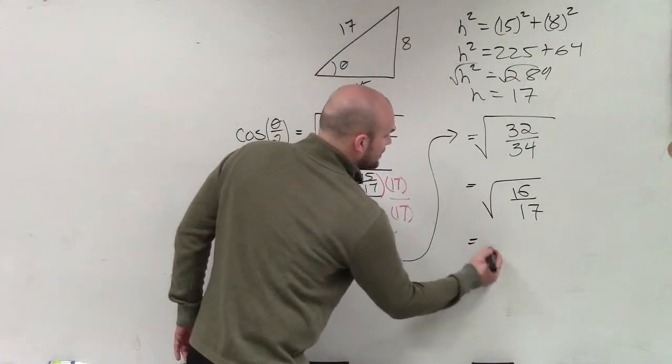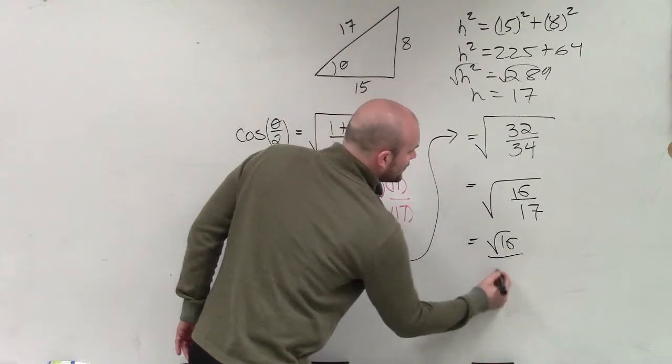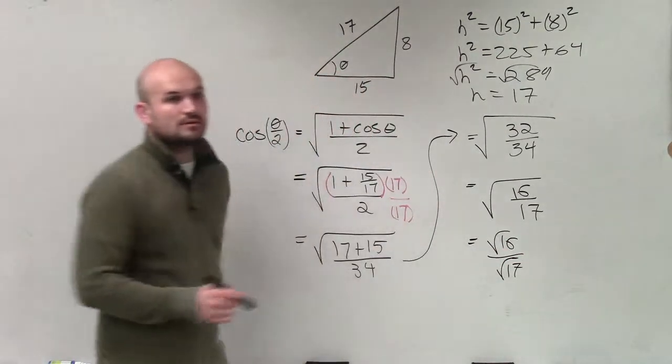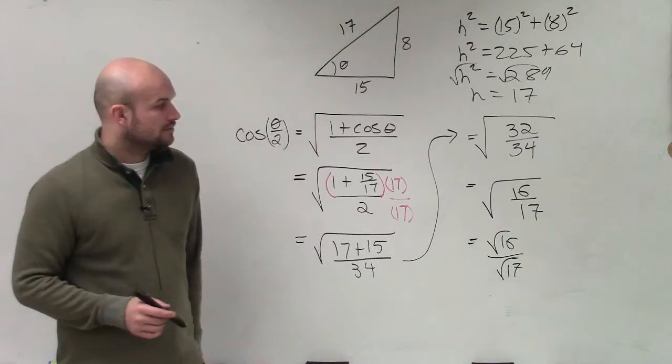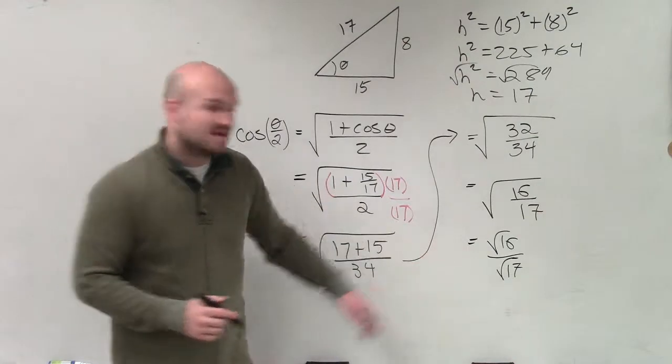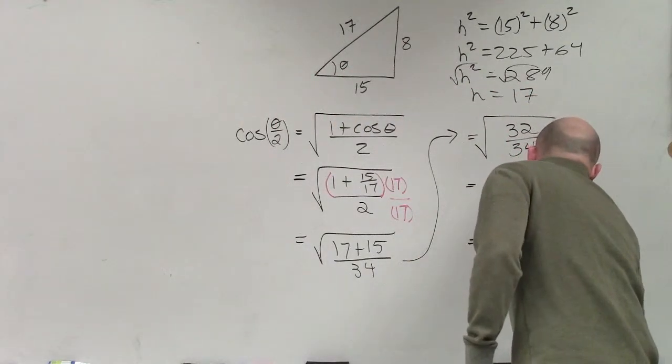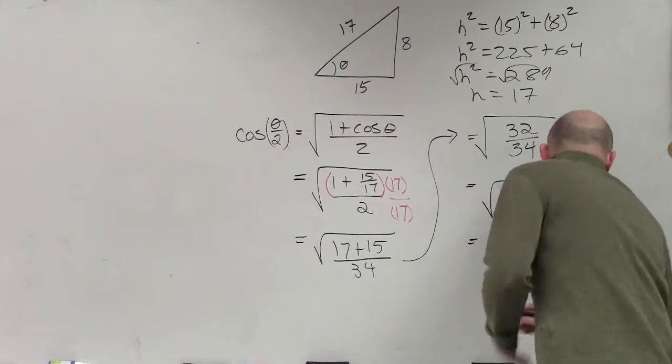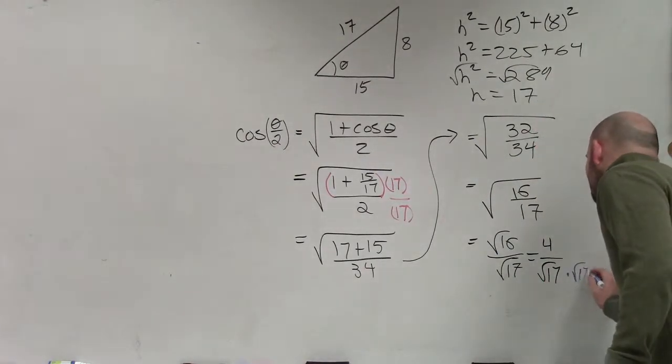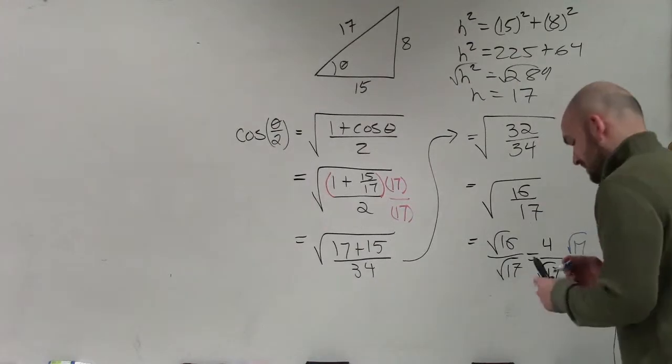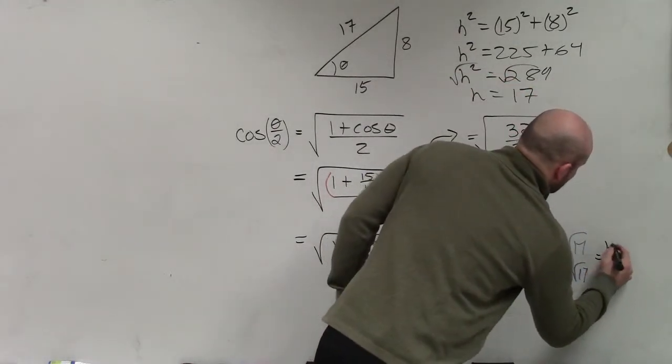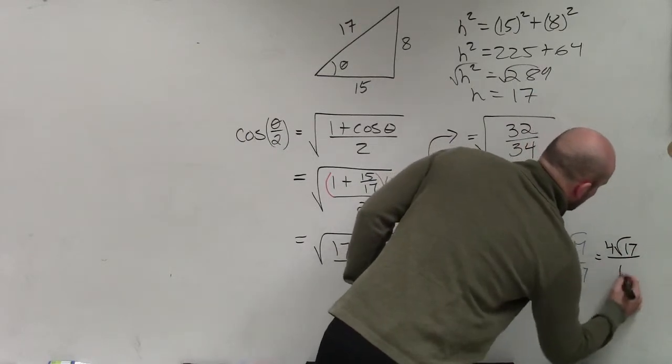Now I'm going to break it up into the square root of 16 over the square root of 17. Well, so now I can take the square root of 16, which is 4 over the square root of 17. Now I have a square root on the bottom, so now I rationalize the denominator. And my final answer is 4 square root of 17 over 17.